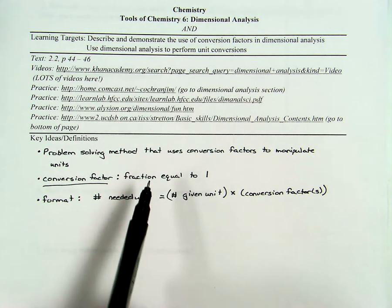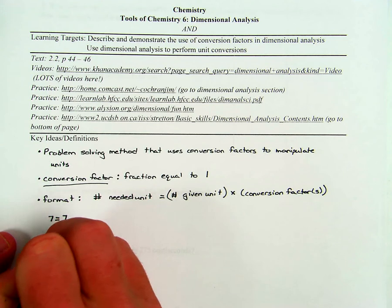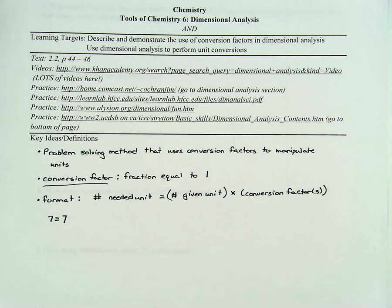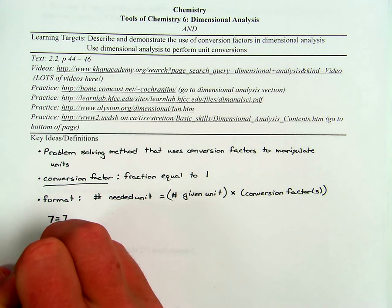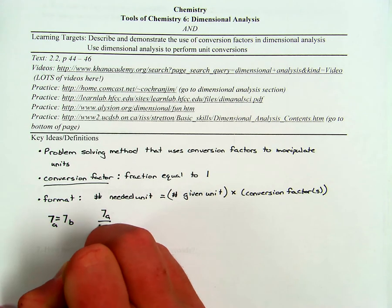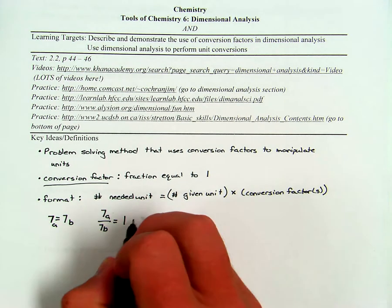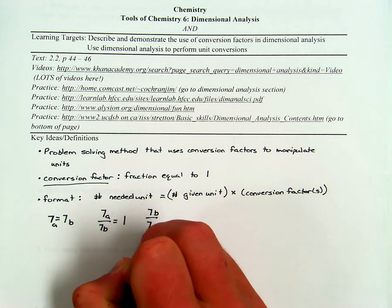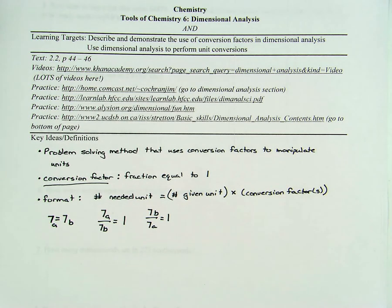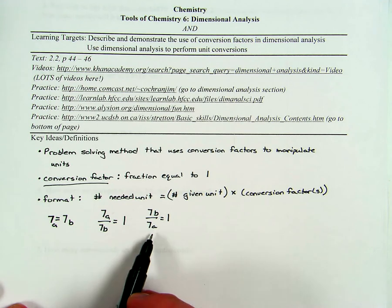We're going to talk about these fractions equal to one. Consider this: if I write 'seven is equal to seven,' everyone would agree that is true. To differentiate between one seven and another, I'll label them 7a and 7b. If I take 7a divided by 7b, because anything divided by itself is one, I get one. Likewise, 7b divided by 7a also equals one. If I multiply any number by either of these ratios — 7a over 7b or 7b over 7a — I am multiplying by one.